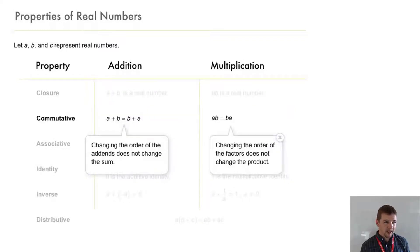The commutative property of addition says that a plus b is equivalent to b plus a. The commutative property of multiplication says that a times b is equivalent to b times a.